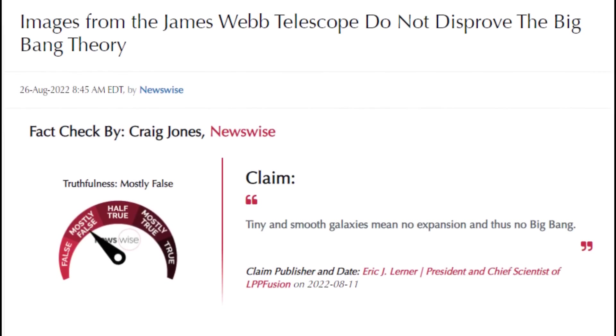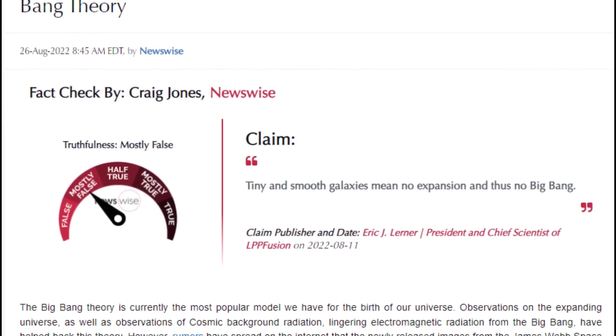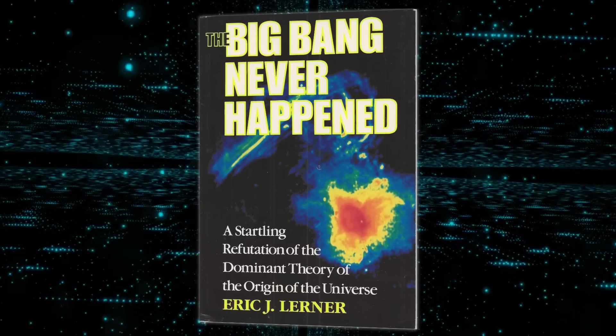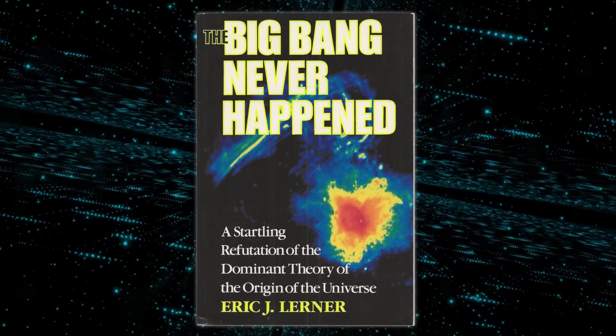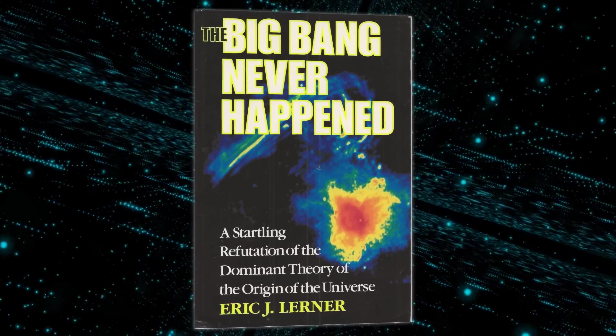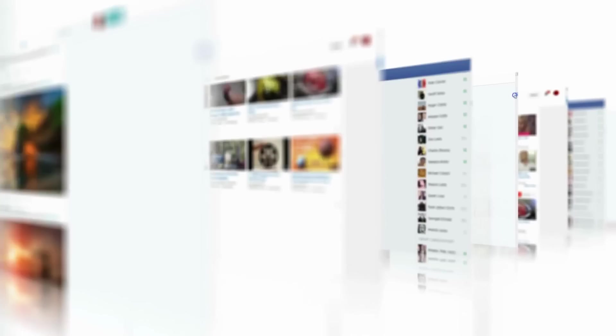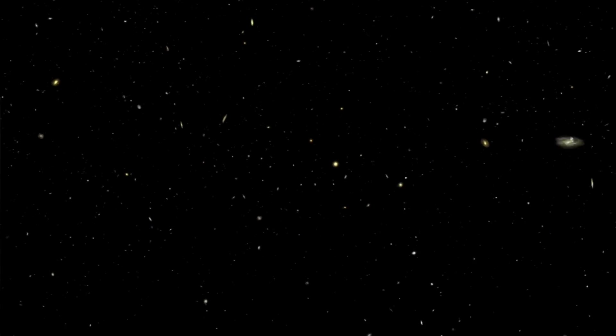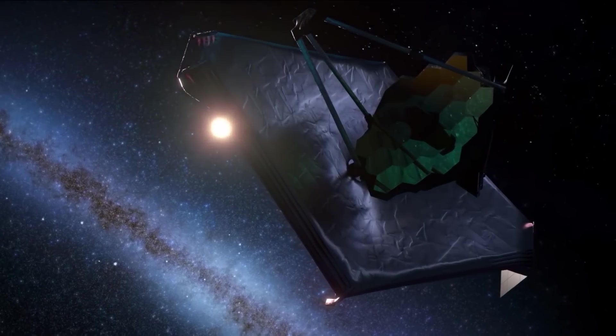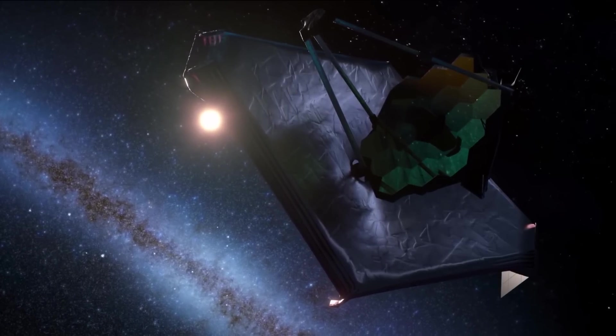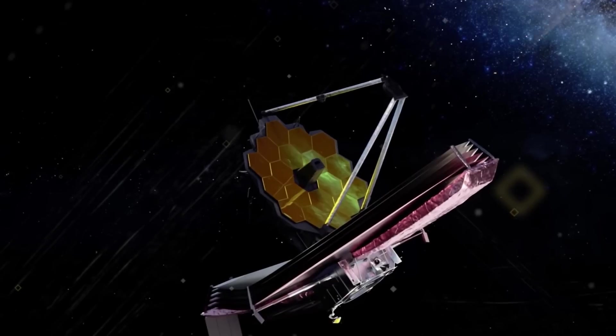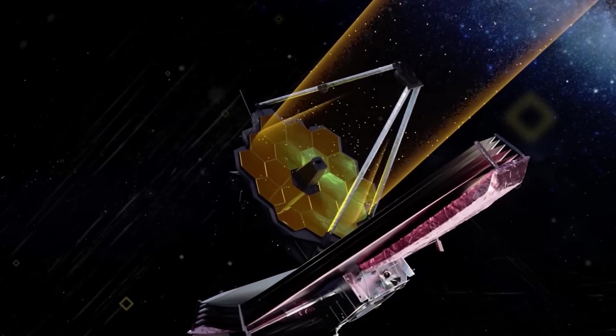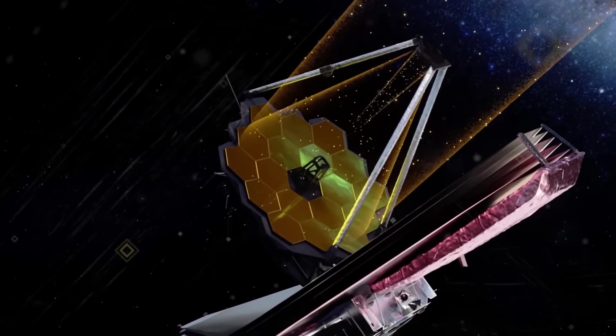It all began with an article published on August 11th by Eric Lerner, an author who has long challenged the Big Bang theory, and has also written a book called The Big Bang Never Happened in 1991. The article was shared widely on social media due to its controversial nature, which challenged what we thought we knew about the universe. The article gained traction due to its association with the James Webb Space Telescope, which has been generating excitement for its ability to see parts of the universe that were previously inaccessible to us.